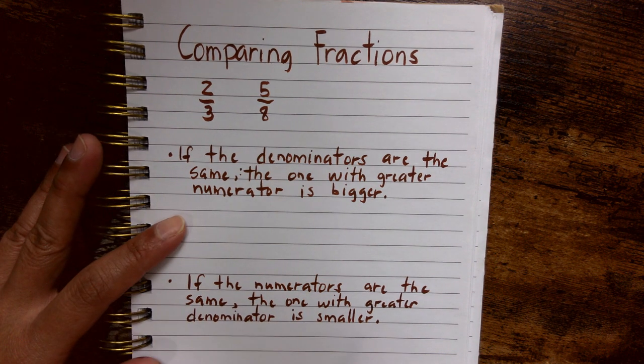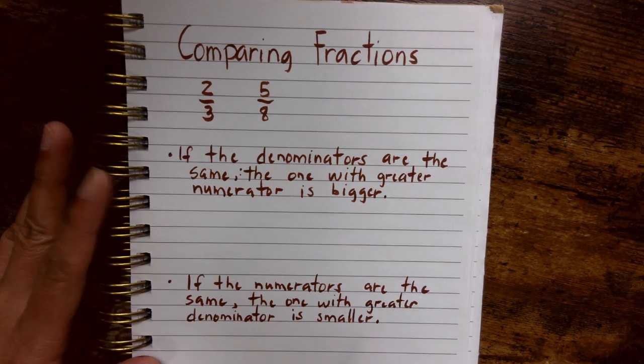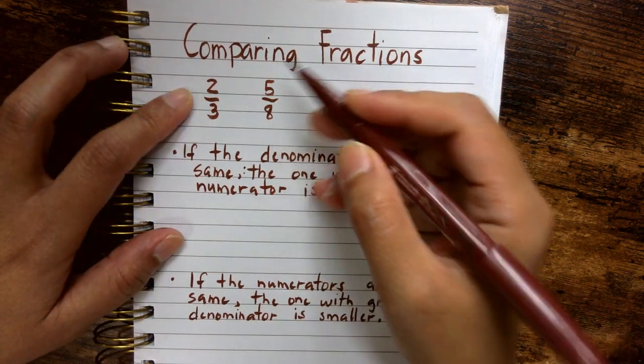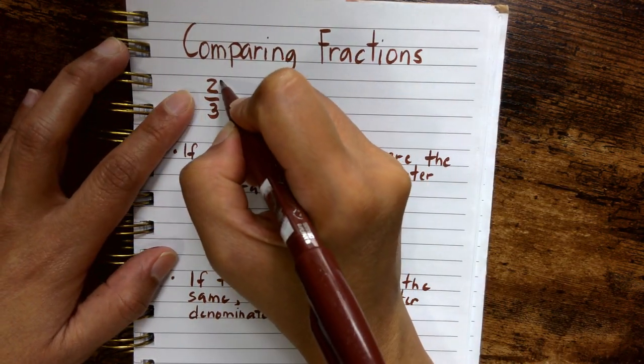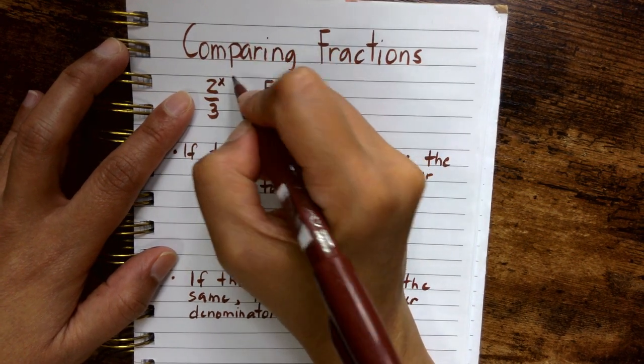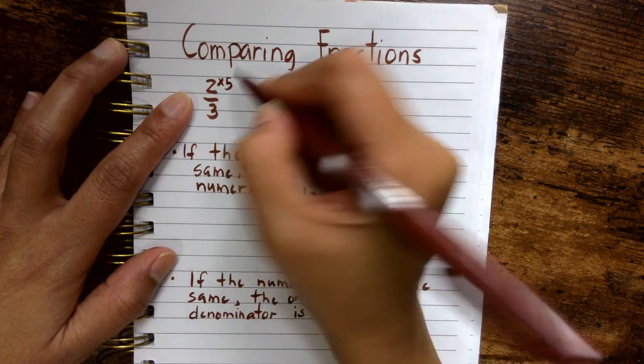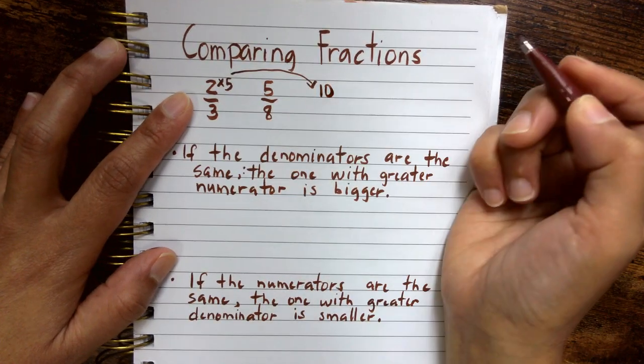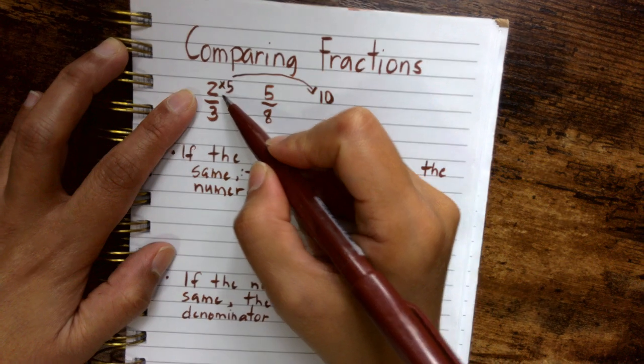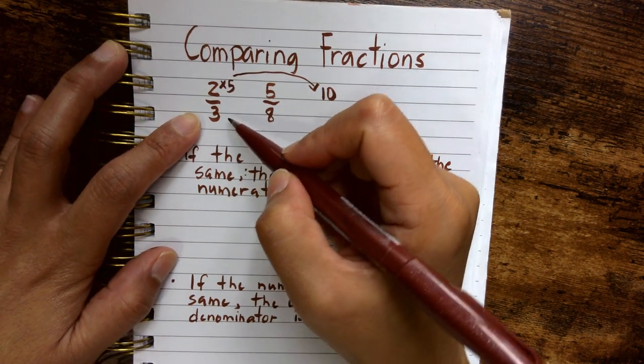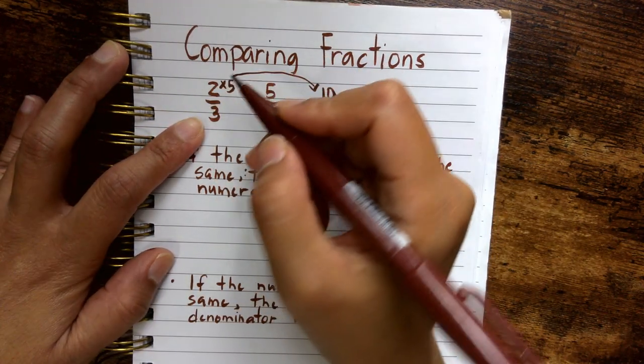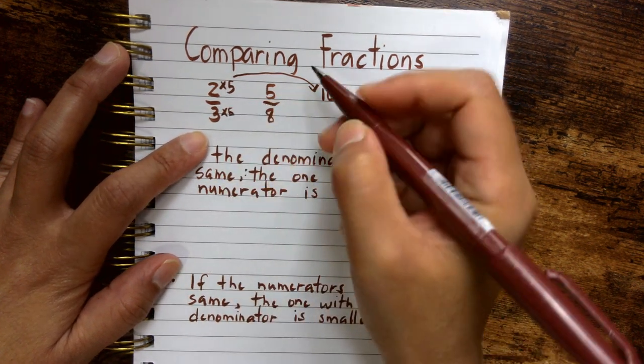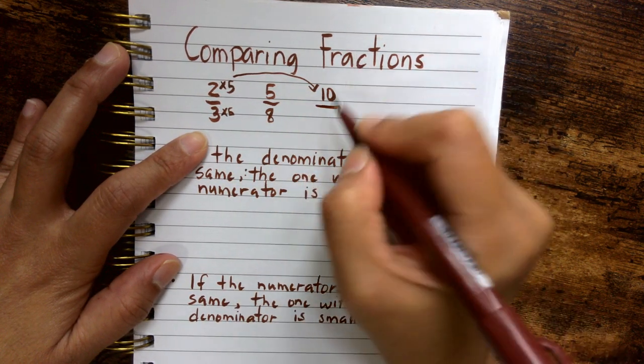In this case, I would probably start with making the numerators the same. Because I know right away that if I multiply two by five, I can have ten. But whatever I do to the numerator, I have to do the same exact thing to the denominator. I'm not changing the value of the fraction. So I would also have to multiply this by five, and that will give me 15.